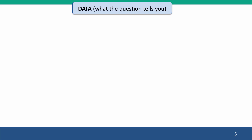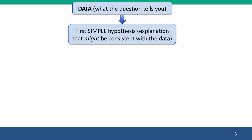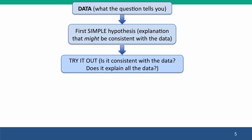Now, here's a sort of schematic drawing of how to go about solving these problems. You start with the data — what the question tells you — and you come up with a simple hypothesis, some simple explanation that could possibly explain the data. You want to start with something simple; don't make it complicated. And then try your idea out: if this was true, is it consistent with the data? Does it explain the data?